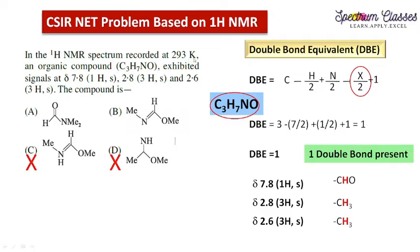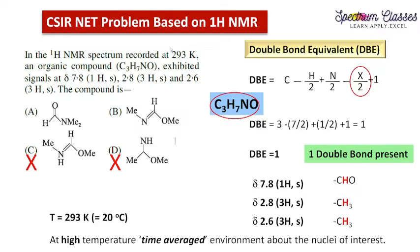In addition to that, temperature is also given in this question. Temperature suggests that the methyl groups present in this molecule are in the same kind of environment, which is time-averaged at high temperature. Spectrum is recorded at this temperature to record the chemical equivalence of the molecule. All such conditions and these chemical shift values indicate that option A is the most appropriate answer for this type of problem.